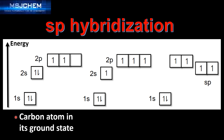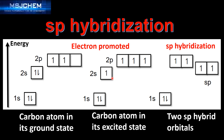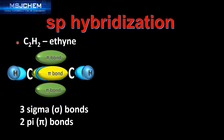Next we look at SP hybridization. We start with the carbon atom in its ground state, promote an electron, and then have the carbon atom in its excited state. We then have the mixing of one 2S orbital and one 2P orbital to form two SP hybrid orbitals, leaving two unhybridized P orbitals. In C2H2, which is ethyne, the sigma bond between the two carbon atoms is formed by the overlap of two SP hybrid orbitals, and sigma bonds between carbon and hydrogen are formed by the overlap of an SP hybrid orbital and an S orbital from the hydrogen atom.